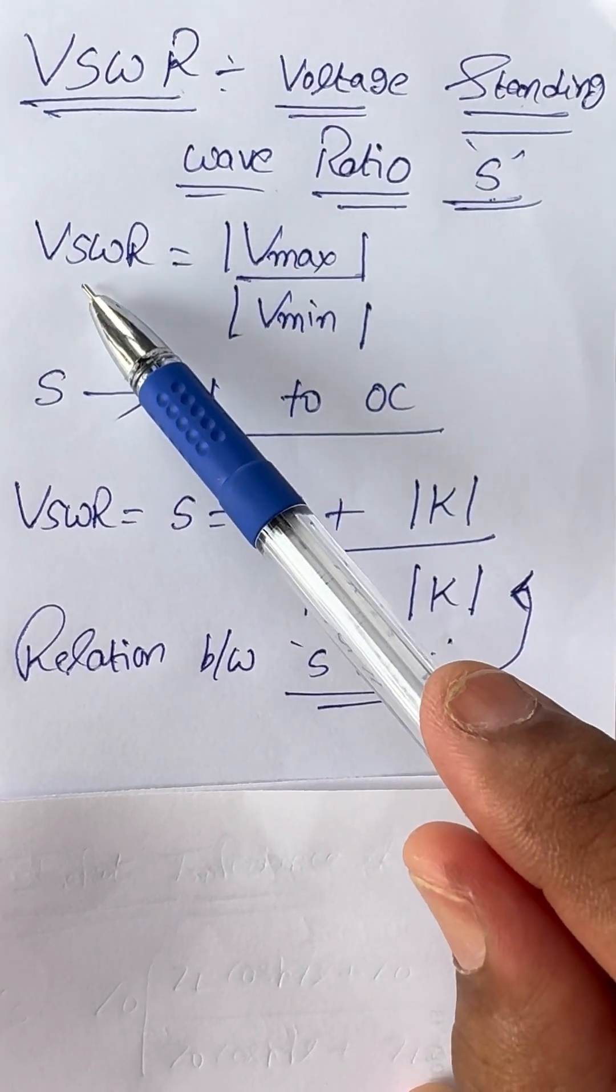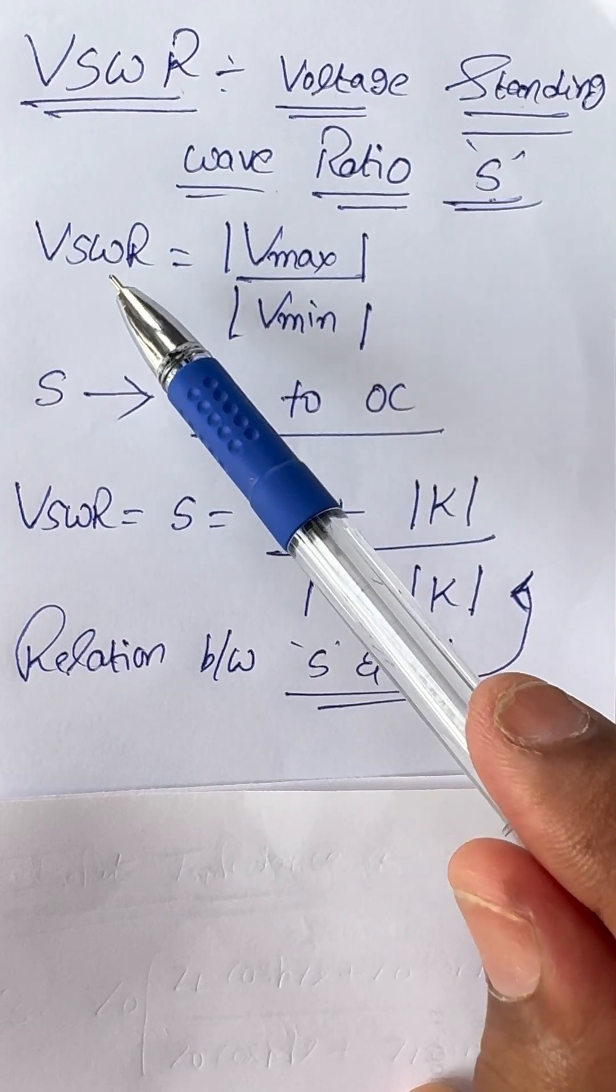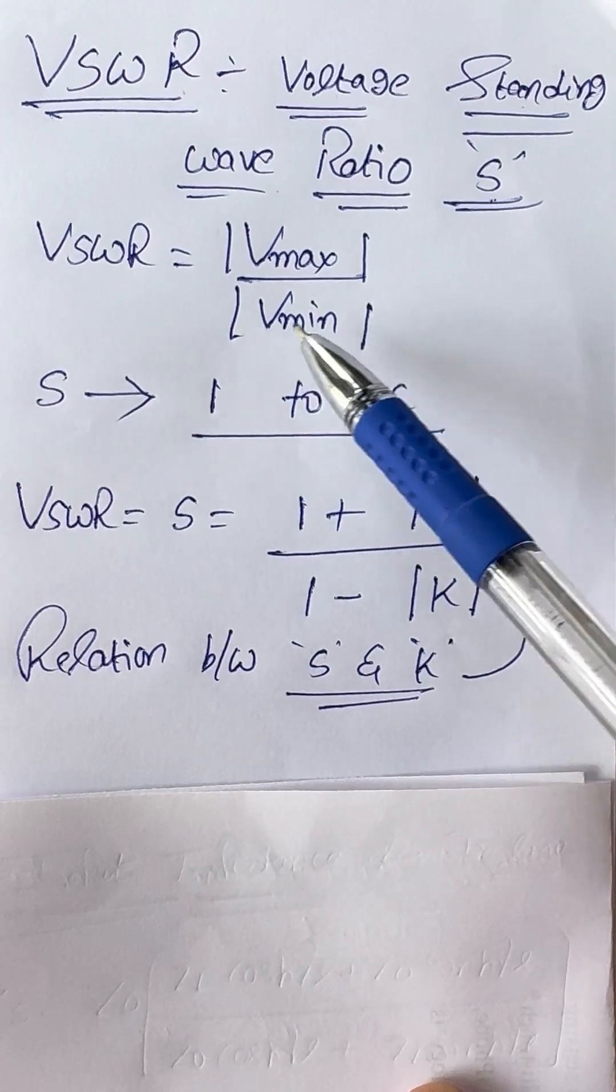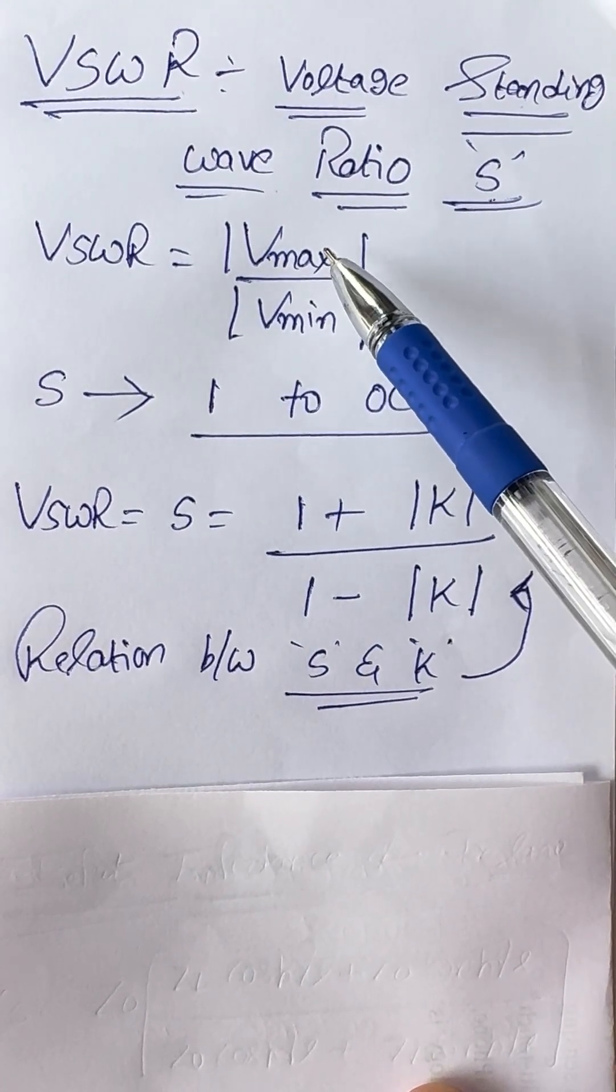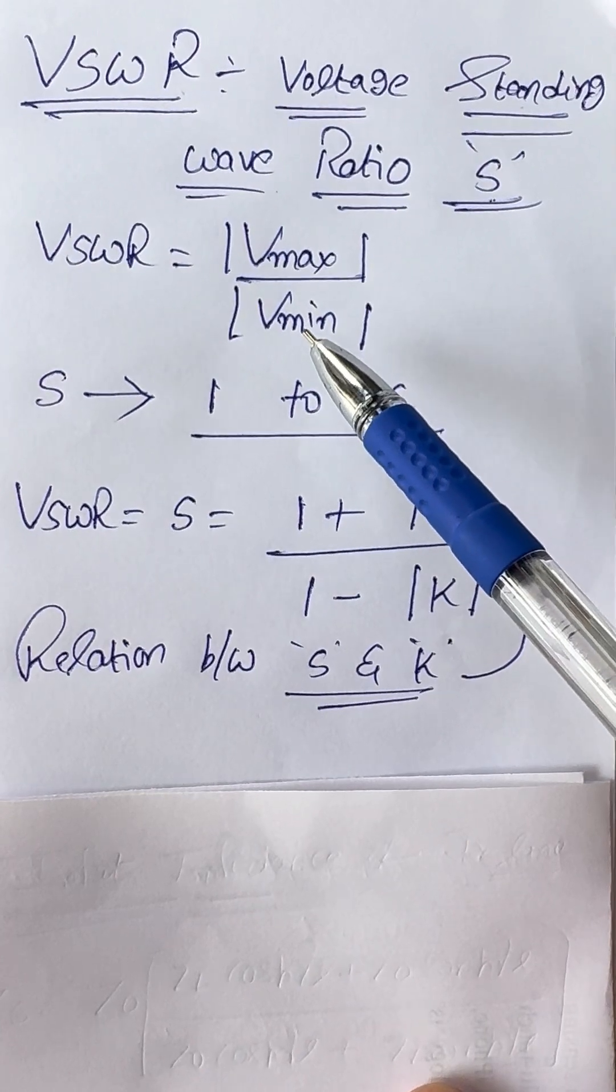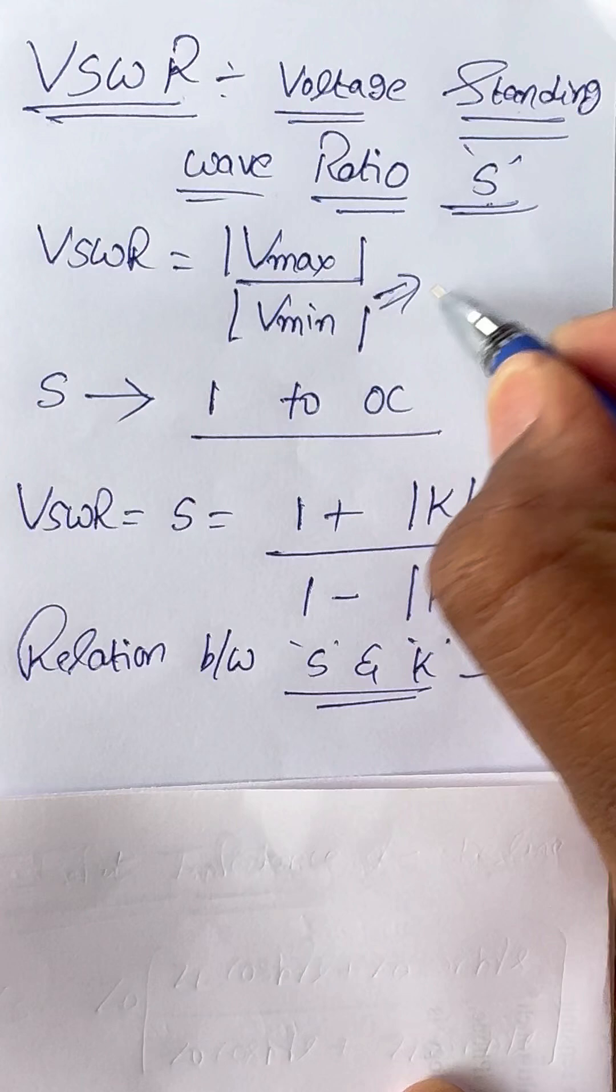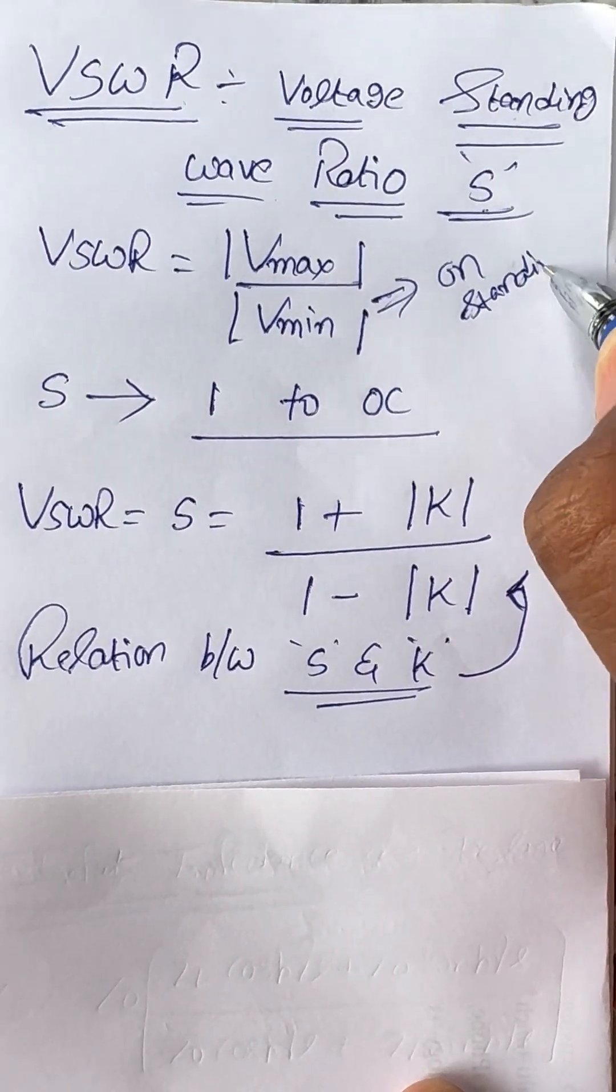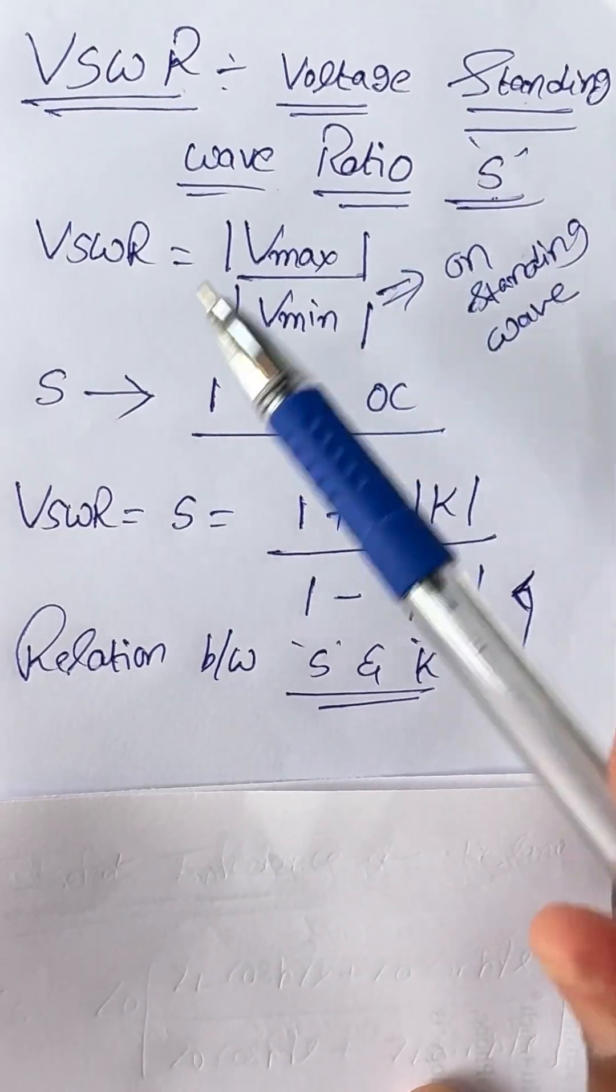Simply VSWR can be defined as the ratio of maximum value of voltage to the minimum value of voltage on a standing wave.